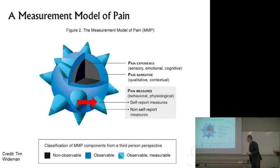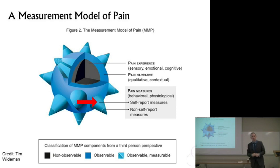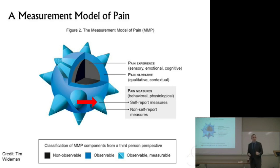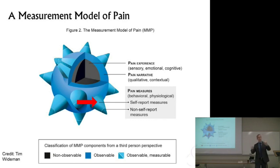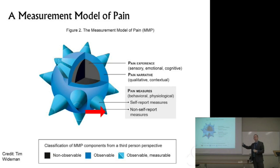Moving further and further away from the true experience are the pain measures. Out here on the spikes, the first level would be the self-report measures. If we're using good — and I'm intentionally using air quotes when I say the word valid — because without a gold standard we can never truly validate the pain scale. But good self-report measures give us some standardized means of trying to understand this whole experience.